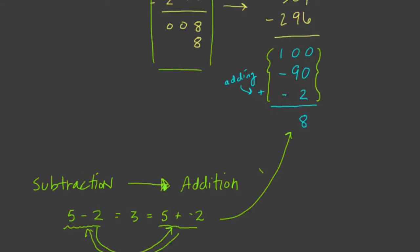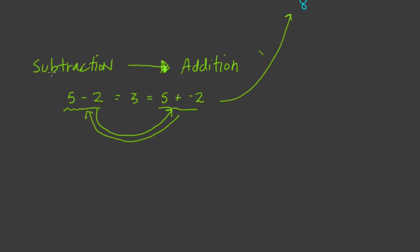We also finished with this side note about the idea that any subtraction problem can be written as addition. Subtracting a positive is adding a negative. Subtracting a negative is adding a positive. These things are going back and forth. This is critical.